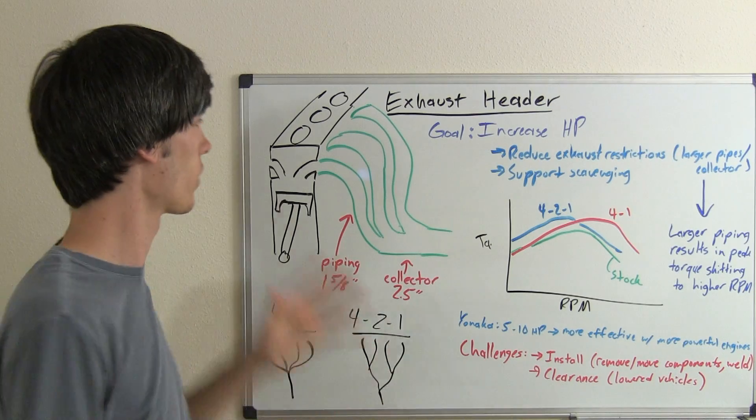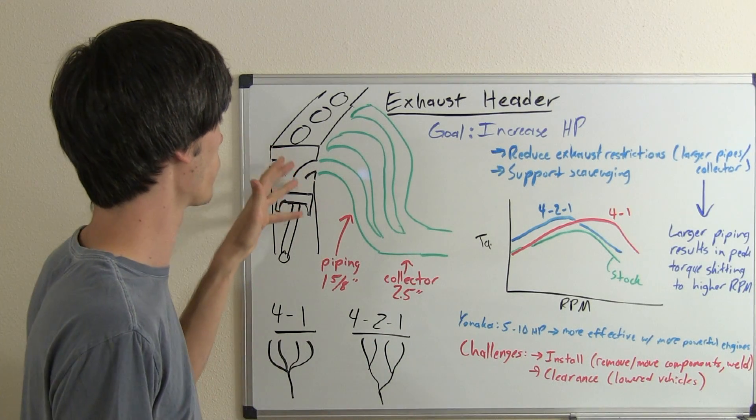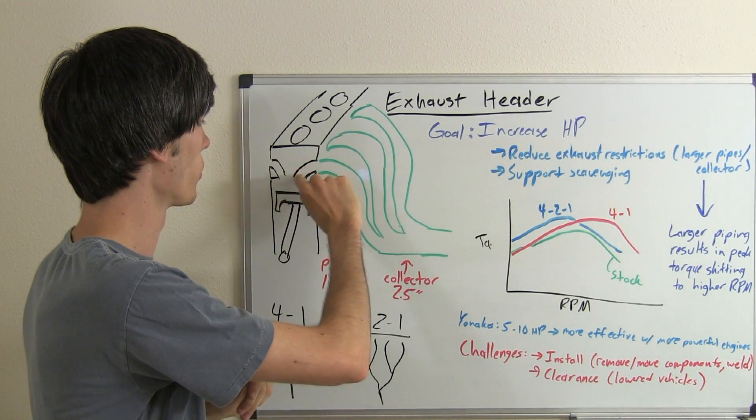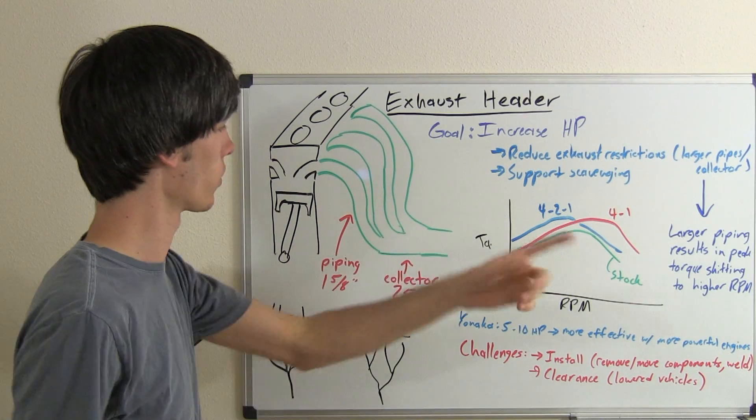The exhaust header is the first piping after the exhaust from the engine exits through the cylinder head and starts to leave out of the car.